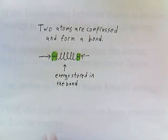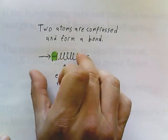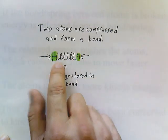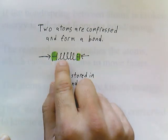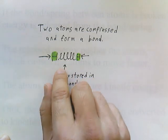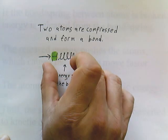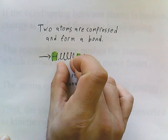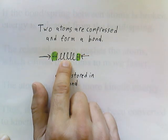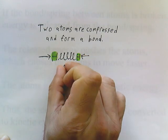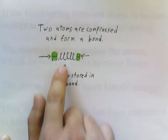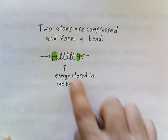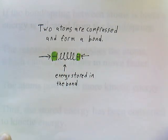Here's an example: we have two hydrogen atoms being compressed together, and a bond forms between them. The bond is analogous to a spring. When you compress and push the atoms closer and closer together, the spring or the bond between them begins to compress, and energy is stored in the bond in the same way that energy is stored in a spring if you were to compress it.